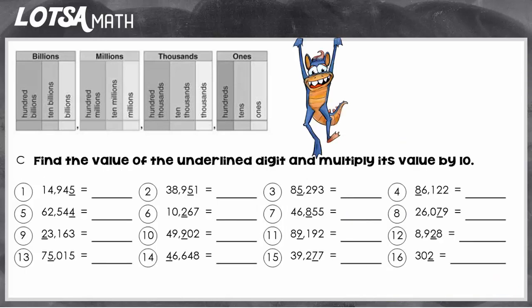So let's look at some examples. All right, so let's look at number one. We're going to first find the value of the underlined digit. So in this case, since the 5 is in the ones place, the value of the 5 is 5.